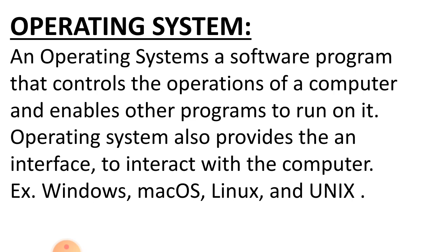iOS is an operating system and an example of a mobile phone operating system. So now, the operating system is what we have explained: it is a software which provides a platform or interface to the user to interact with the computer, and it also helps other applications run.